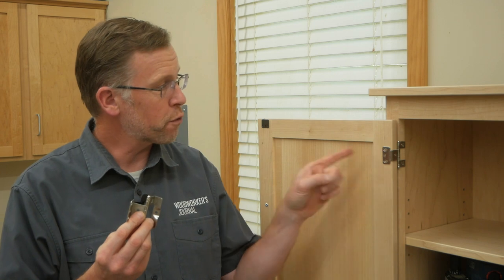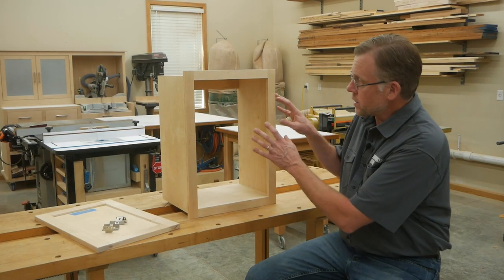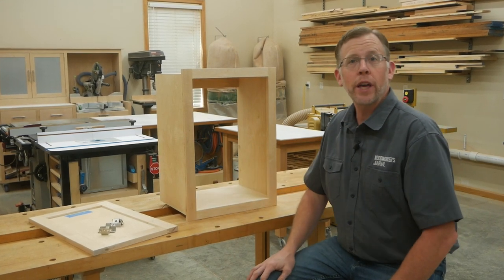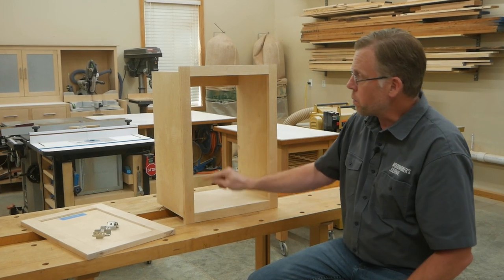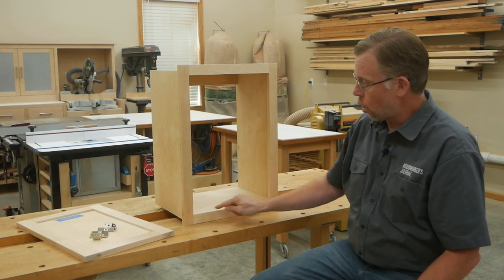Here's how to install this first style of no-mortise hinge, the wrap-around style. I've got a sample face frame cabinet and a frame and panel cabinet door that's already sized to fit inside this face frame with about a sixteenth inch of reveal all the way around.